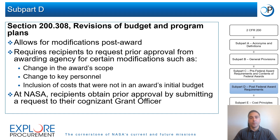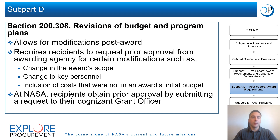While an award is being implemented, recipients may find that they need to alter certain aspects of the award. Modifying an award after it has been issued is allowable; however, per Subpart D Section 200.308, recipients must request prior approval from the awarding agency for certain modifications. At NASA, recipients must obtain prior approval for reasons listed in Section 200.308 by submitting a request to their cognizant grant officer, who can be found on the award's cover sheet, known as NASA Form 1687 or NF 1687.